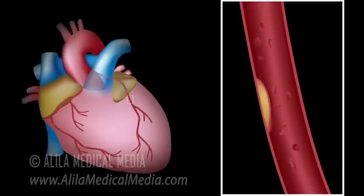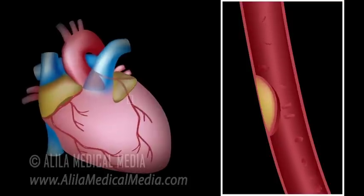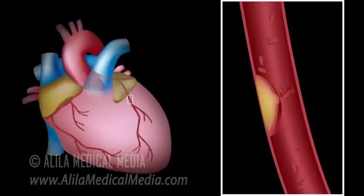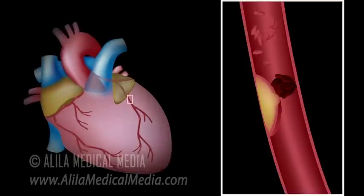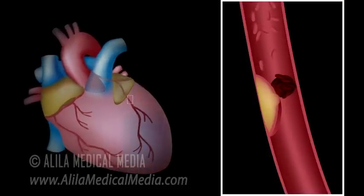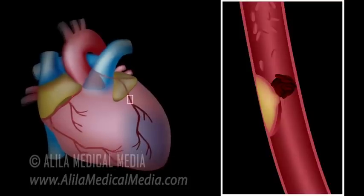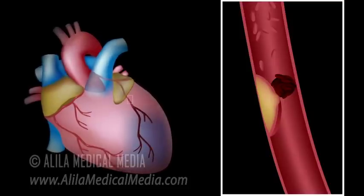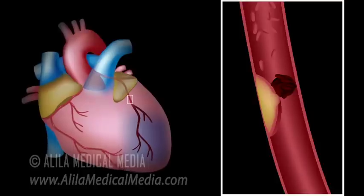As the plaque builds up, the vessel becomes narrow, restricting blood flow. Under stress, the plaque may rupture. This triggers formation of a blood clot on top of the plaque, leading to complete blockage of blood flow. When this happens in the coronary artery, the downstream patch of the myocardium dies from lack of oxygen. Weakened heart muscle may disrupt electrical activity of the heart and subsequently cause cardiac arrest.